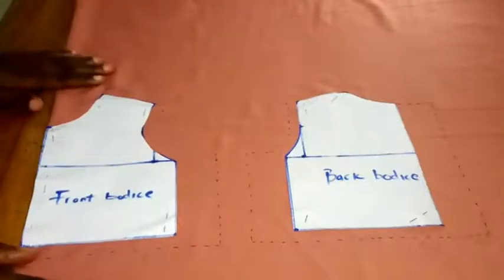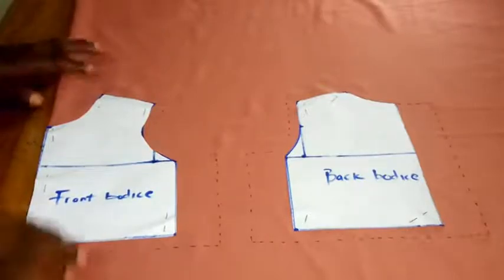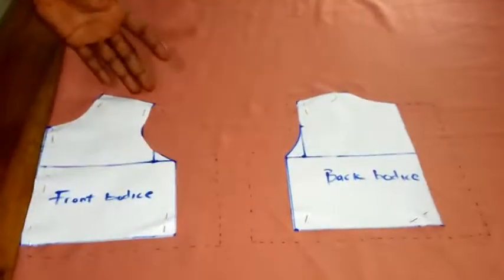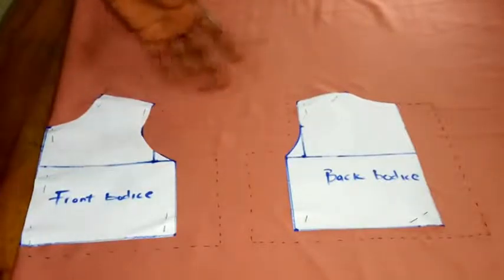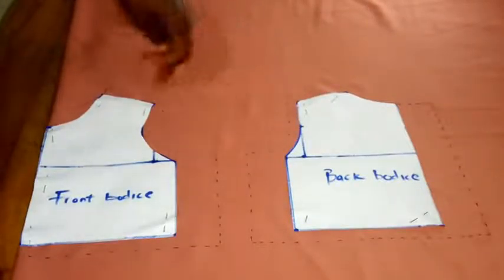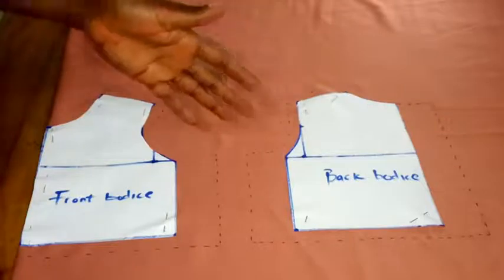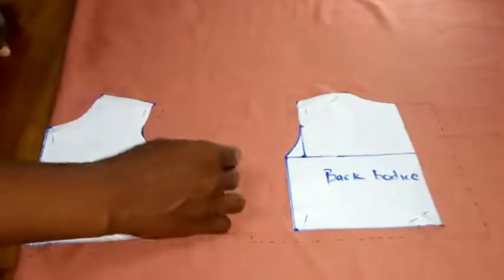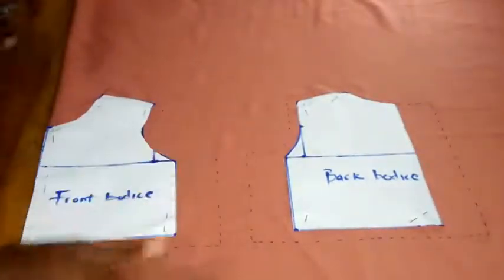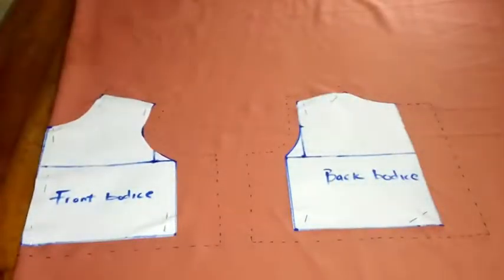This is how to add seam allowance on our front and back pattern. As you can see, I added half inch around the shoulder on both sides, around the armhole - half inch. And I added 1.5 inches each at the sides, then 1.5 for zip allowance.